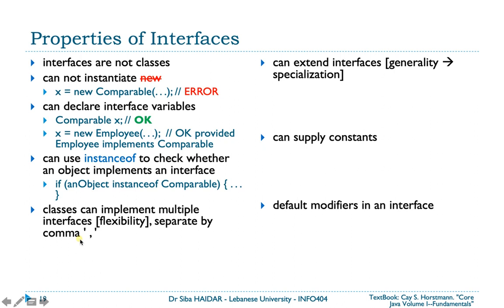Classes can implement multiple interfaces — this is the flexibility. In this case you separate the names of the interfaces by a comma. For example, the class Employee will implement Cloneable and Comparable, separated by a comma. The Cloneable interface will be the subject of the next subsection.